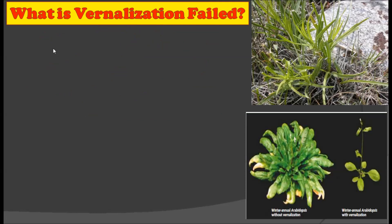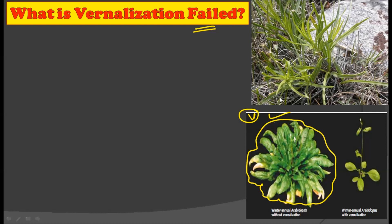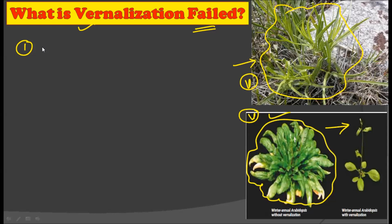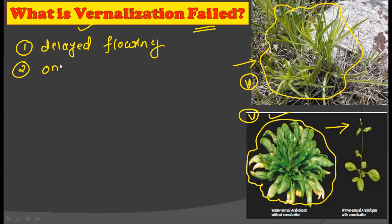What happens if vernalization fails? If vernalization fails, you will observe the plant growing only in its vegetative growth. There are two possible effects if vernalization fails: one is delayed flowering — flowering will be significantly delayed — and second, only vegetative growth will occur in the plant.